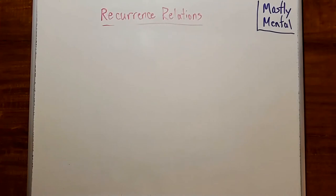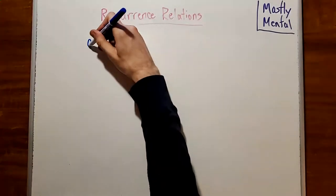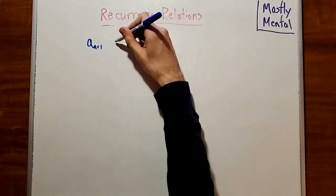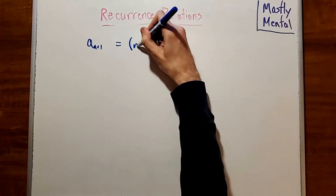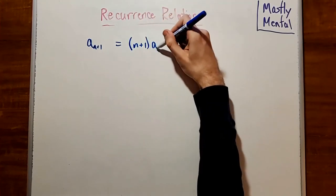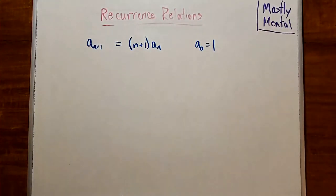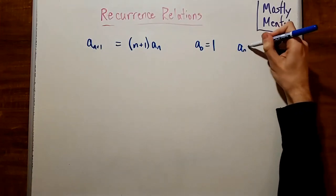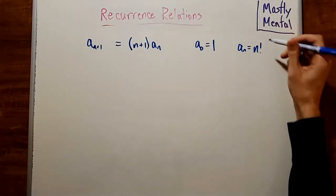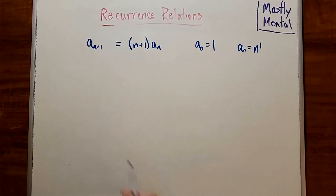Let's try another example. Consider a_{n+1} equals (n+1) times a_n, where a_0 is 1. Now, it's not too hard to see that a_n is going to be n factorial. In fact, this recurrence is a common way to define the factorial function. But once again, let's pretend we don't see that and solve this using generating functions.